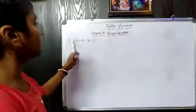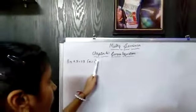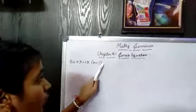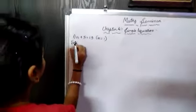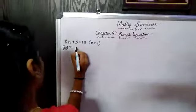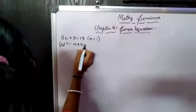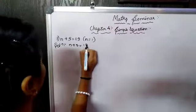First question: N plus 5 equal to 19. The N value given is 1. So let us solve this. N plus 5 equal to 19.